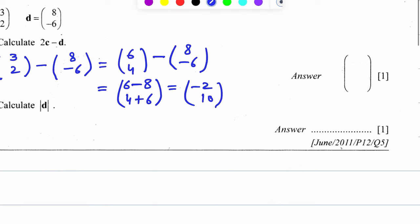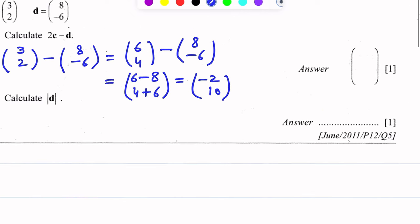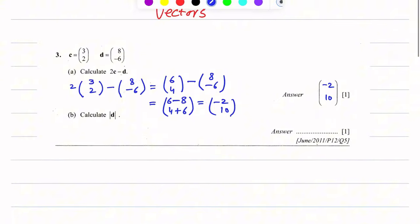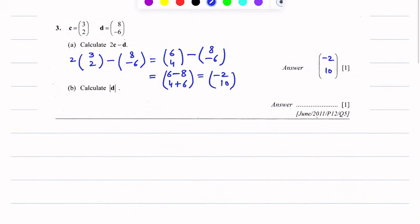So (-2, 10) is the answer. We need to write this answer in the answer space: (-2, 10). Then part b: Calculate |d|.